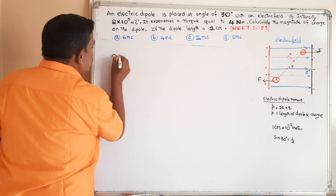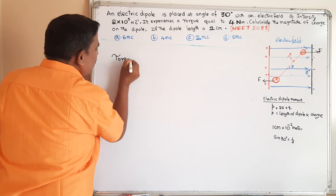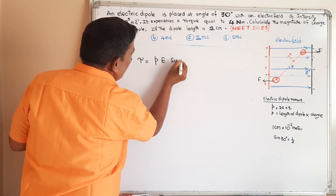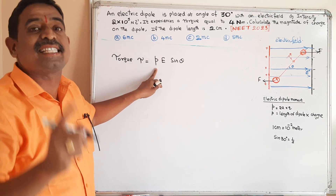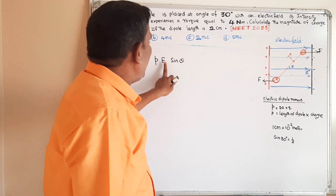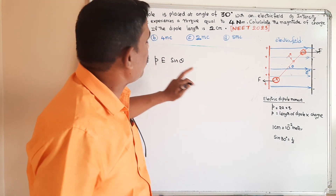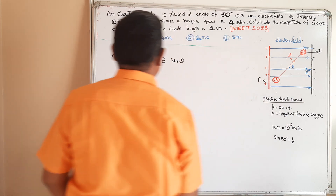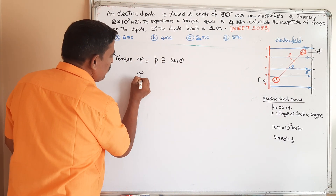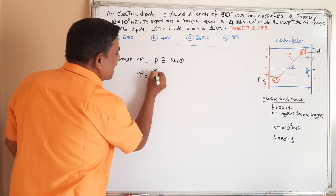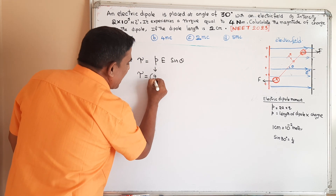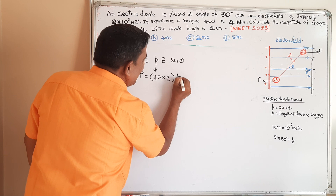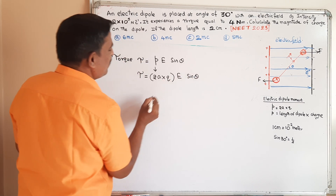Torque on an electric dipole placed in a uniform electric field is: τ = PE sinθ, where P represents the electric dipole moment, E represents the intensity of electric field, and theta is the angle between the direction of the dipole moment and the electric field. Electric dipole moment P equals the length of the dipole into charge: P = 2A × Q.